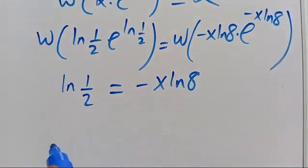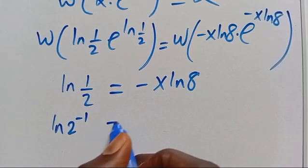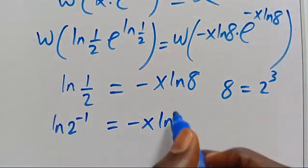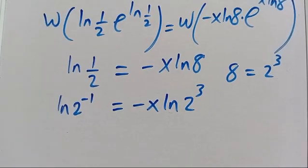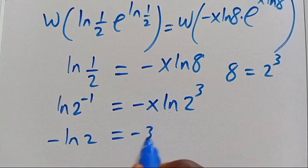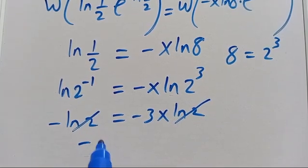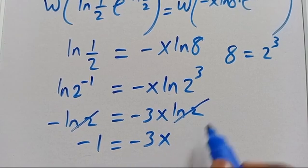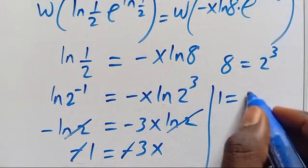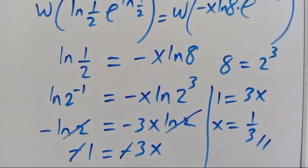From here we have ln(2 to the power of minus 1) equals minus x times ln(8). Since ln(8) equals ln(2 to the power of 3), this gives us minus 1 times ln(2) equals minus 3x times ln(2). Cancelling ln(2) from both sides, we get minus 1 equals minus 3x, so 1 equals 3x, and therefore x equals 1 divided by 3.